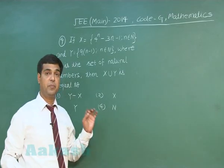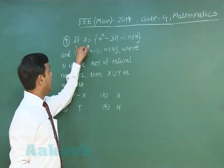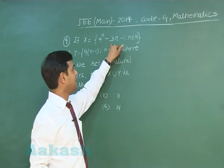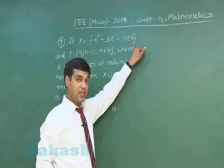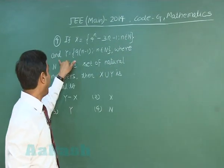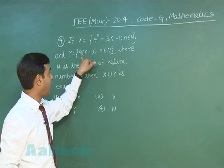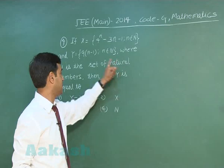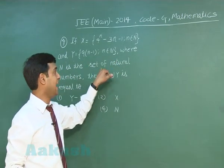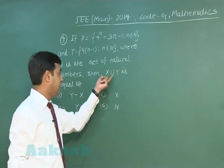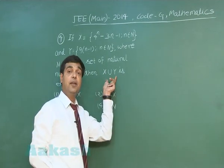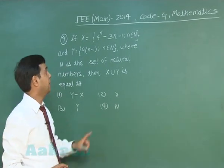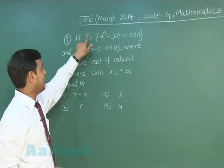Let's start with question number 4. If capital X equals 4 to the power n minus 3n minus 1, where n belongs to the set of natural numbers, and capital Y equals 9 times n minus 1, again n is from the set of natural numbers, then X union Y is equal to — four options are given to choose from.